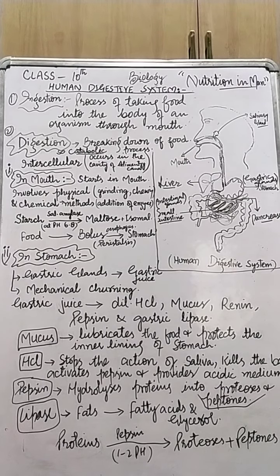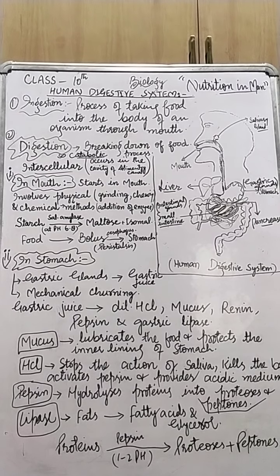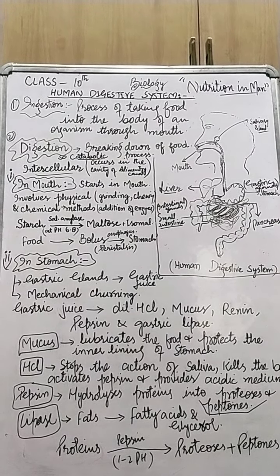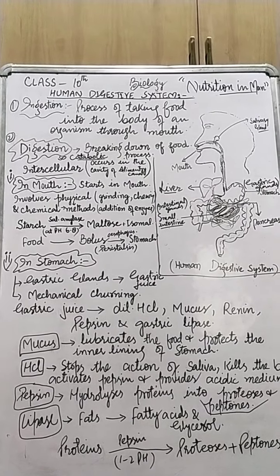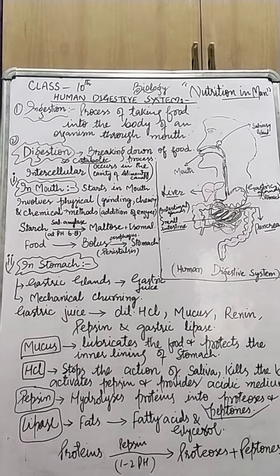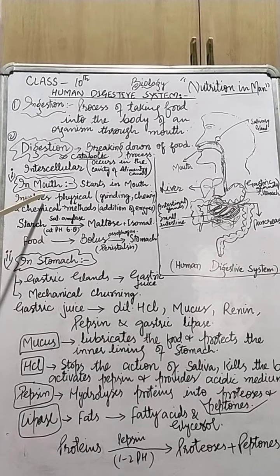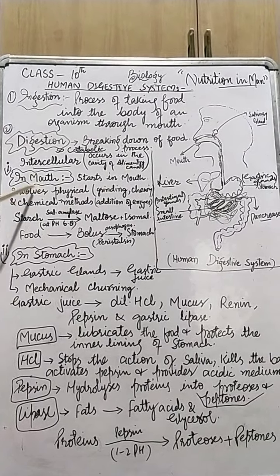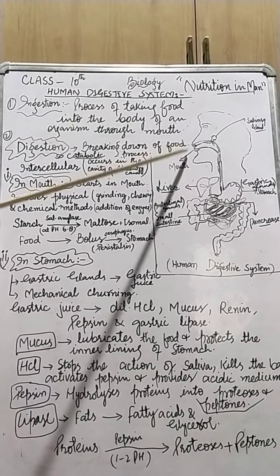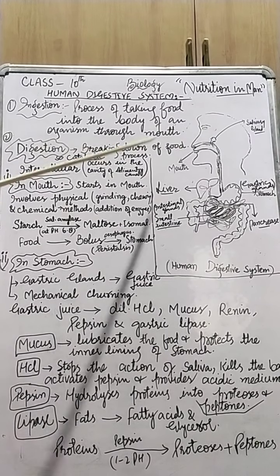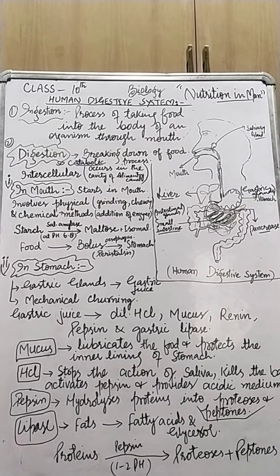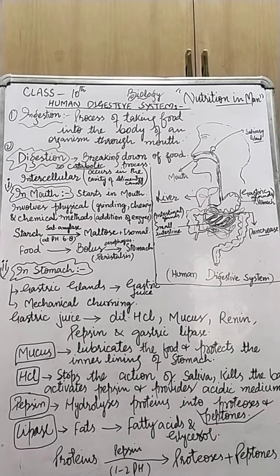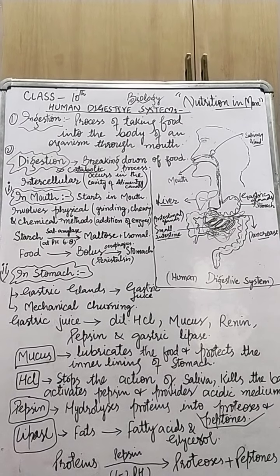So, we will first talk about digestion in mouth. Digestion of food starts in the mouth. The food ingested is chewed by teeth and broken into small particles. In the mouth we have our buccal cavity with teeth, tongue, and salivary glands which help in the digestion process, for the digestion of food.